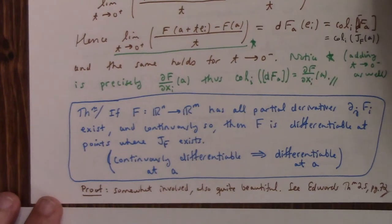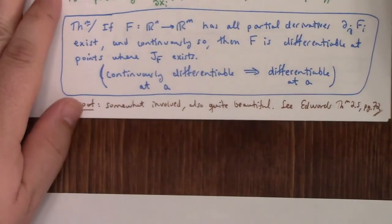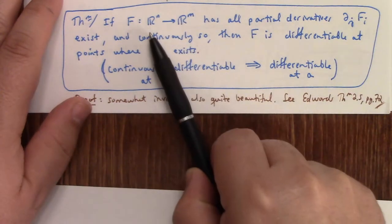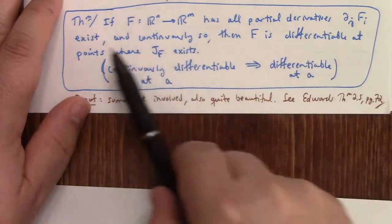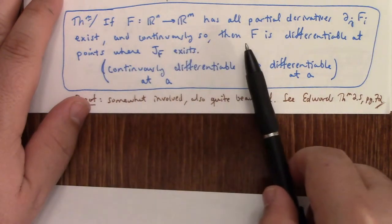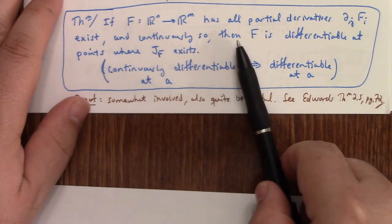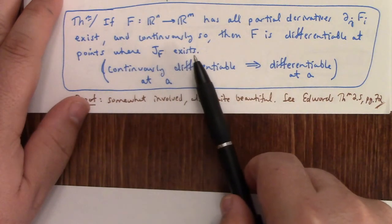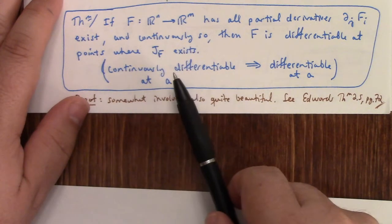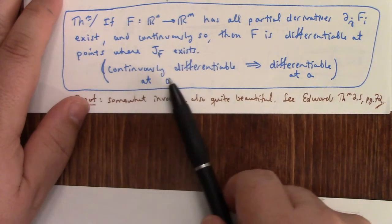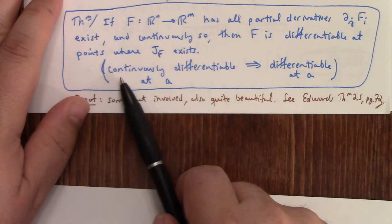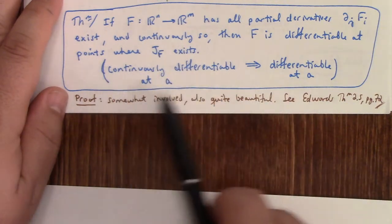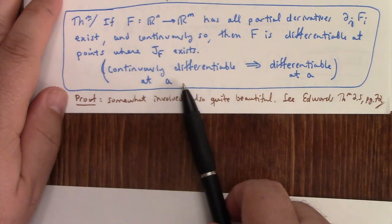The other direction, though, is more subtle. The other direction is considerably more subtle. If the function from R^n to R^m has partial derivatives which exist, and continuously so, right, near a point, then F is differentiable at points where the Jacobian of F exists. And so to state this sort of more in terms of terminology, what this theorem is saying is that continuous differentiability at a implies differentiability at a.